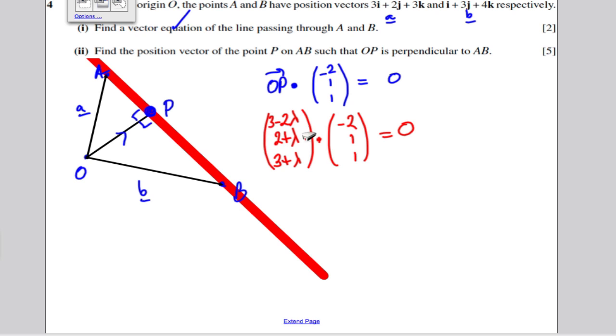If I multiply this out, this scalar product, and then I can solve for lambda to get what lambda must be. Then I can substitute lambda back into the equation of the line and tell us what the position of point P is. So let's times this out.